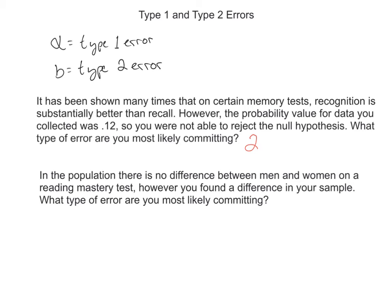Let's look at the next one. In the population, there is no difference between men and women on a reading mastery test. However, you found a difference in your sample. What type of error are you most likely committing?